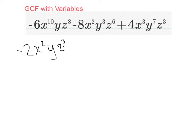So, negative 2x squared yz cubed is the GCF. And negative 6x to the 10th yz to the 8th minus 8x squared y to the 3rd z to the 6th plus 4x to the 3rd y to the 7th z to the 3rd becomes negative 2x squared yz to the 3rd parentheses 3x to the 8th z to the 5th plus 4y squared z to the 3rd minus 2xy to the 6th, close parentheses.